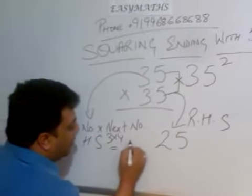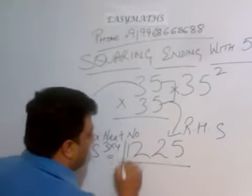So 3 multiply by 4, which is 2, 2, and the answer is 1, 2, 2, 5. Let's do another example.